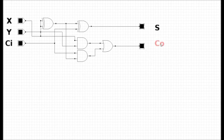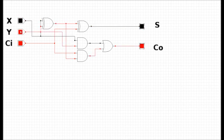If everything went well, we can test some example cases. Right now we see 0 plus 0 plus 0 is 0 — correct. Adding a 1, the sum is 1 — correct. 1 plus 1 is 2 — correct. 1 plus 1 plus 1 is 3 — correct. Testing various combinations, they all work. This is our full adder circuit. This is how these are built in the real world at the most simple level, and you can build one for about 50 cents worth of electronics.